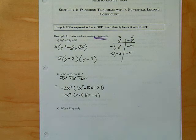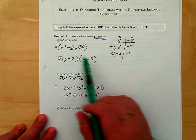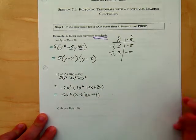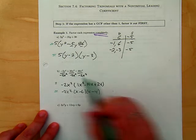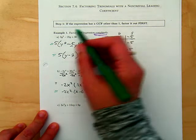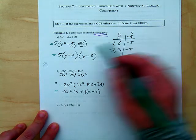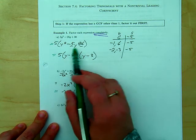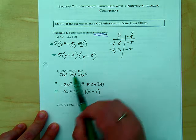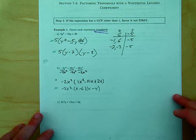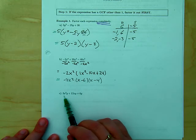We just looked at some problems where we factored completely — these are all equivalent. Factoring completely usually means starting with the GCF, and once you've factored out the GCF it makes it much easier to factor the rest. So let's look first: is there a GCF in this problem here?